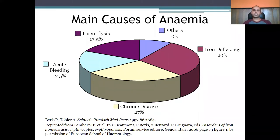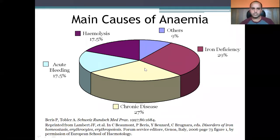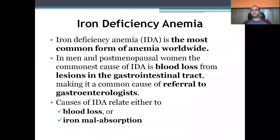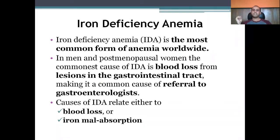The main causes of anemia include hemolysis, acute bleeding, chronic disease, iron deficiency, and others. Iron deficiency anemia — IDA — is the most common form of anemia worldwide. In men and post-menopausal women, the common cause of IDA is blood loss from lesions in the gastrointestinal tract, and it is a common reason for referral to a gastroenterologist. Blood loss in the GI tract may result from peptic ulcer or duodenal ulcer, among other causes. Another cause of IDA is iron malabsorption.